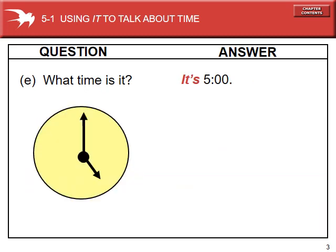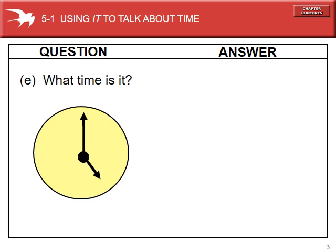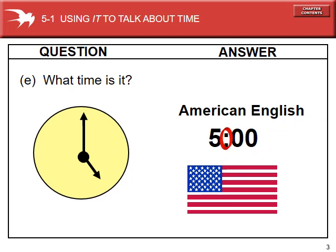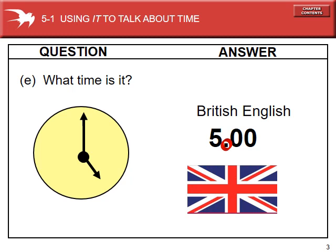Another question we might ask is "What time is it?" — in this case, we're asking about clock time. Again, "it" refers to time in both the question and the answer. We can answer: it's five, it's five o'clock, it's 5 PM. There's a difference between writing time in American English and British English. In American English, we use a colon between the five and the zero zero. In British English, they use a period. Since we're in America, learn the American way of writing.